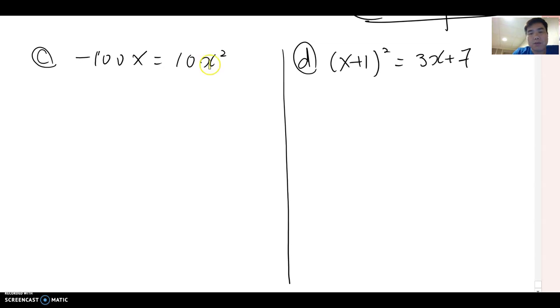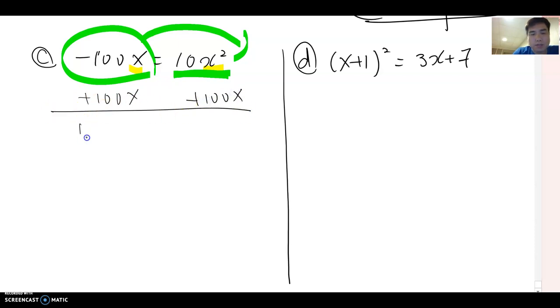As you see, compared to x squared and x, this is the greater term, which means the leading term here. Last time, I mean, just a moment before, I asked you to make one side equal to 0. Since this is our leading term, I am going to remove this one on this side and then move it to the other side here. Which means you combine the opposite of this form, which is plus 100x. Then, this becomes 0 equals 10x squared plus 100x.